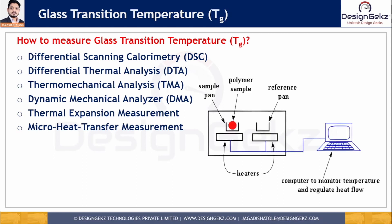In differential scanning calorimetry, the heat flowing into or out of a sample is measured as a function of temperature or time while the sample is exposed to a controlled temperature program. It is a powerful technique to evaluate material properties such as glass transition temperature, melting, crystallization, specific heat capacity, cure process, purity, oxidation behavior, and thermal stability. In DSC, a small sample of around 1 to 15 milligrams is placed in a closed crucible inside a temperature-controlled DSC cell, with a second empty crucible used as a reference. The difference in heat required to raise the temperature of the sample versus the reference is measured as a function of temperature.